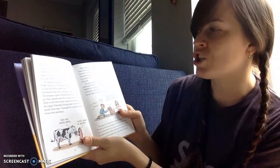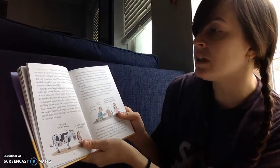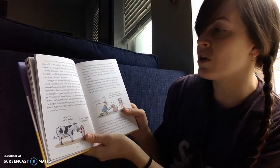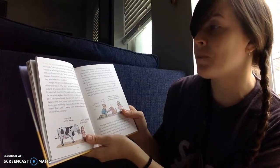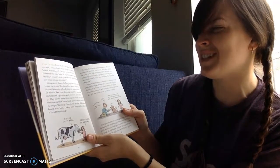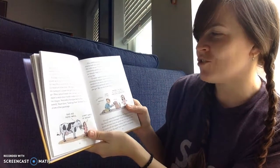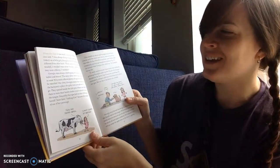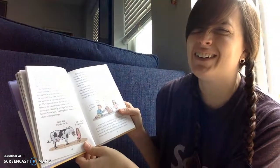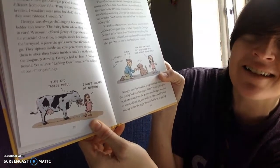Georgia was always challenging her sisters to be bolder and braver. The dairy farm where they lived in rural Wisconsin offered plenty of opportunities for mischief. One time, Georgia snuck her sisters into the barnyard, a place the girls were not allowed to go. They tiptoed inside the cow pen, where she dared them to stick their hands inside a cow's mouth to feel the tongue. Naturally, Georgia had no fear of doing so herself.